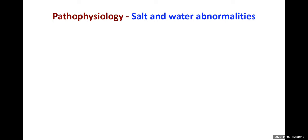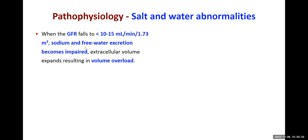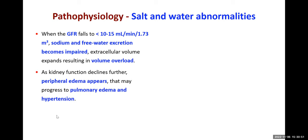Salt and water abnormalities happen when GFR is very low — around 10 to 15 ml/min. Sodium and free water excretion becomes impaired when GFR falls below 10–15 ml/min, leading to accumulation of water in the body — volume overload — which increases cardiac workload, causes peripheral edema, and if GFR further decreases, can lead to pulmonary edema and hypertension.